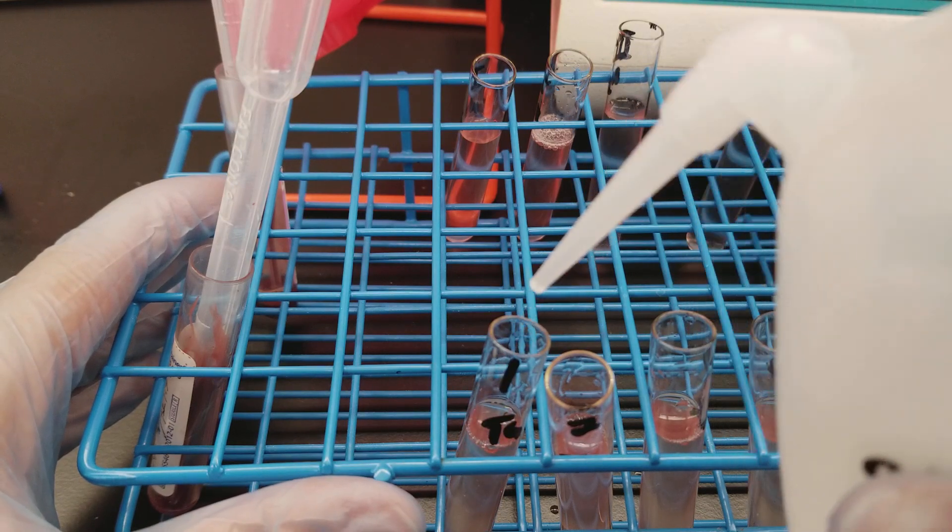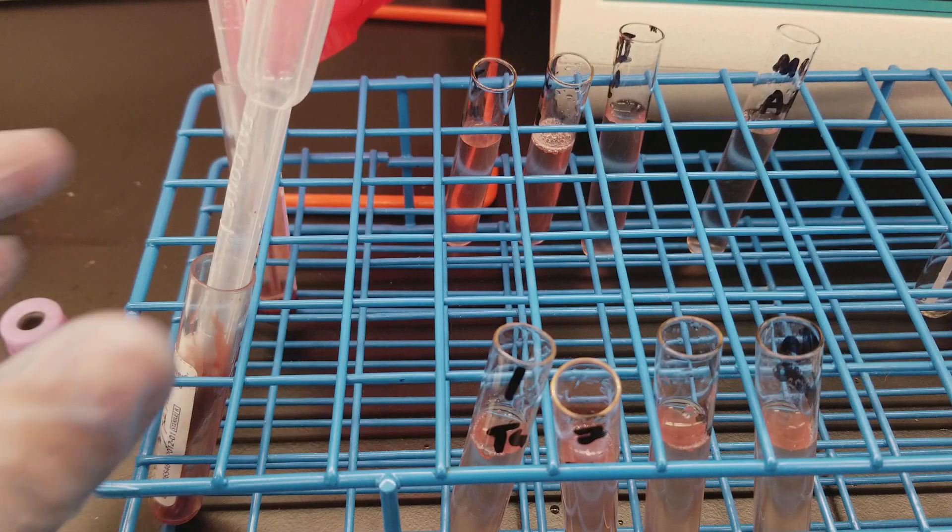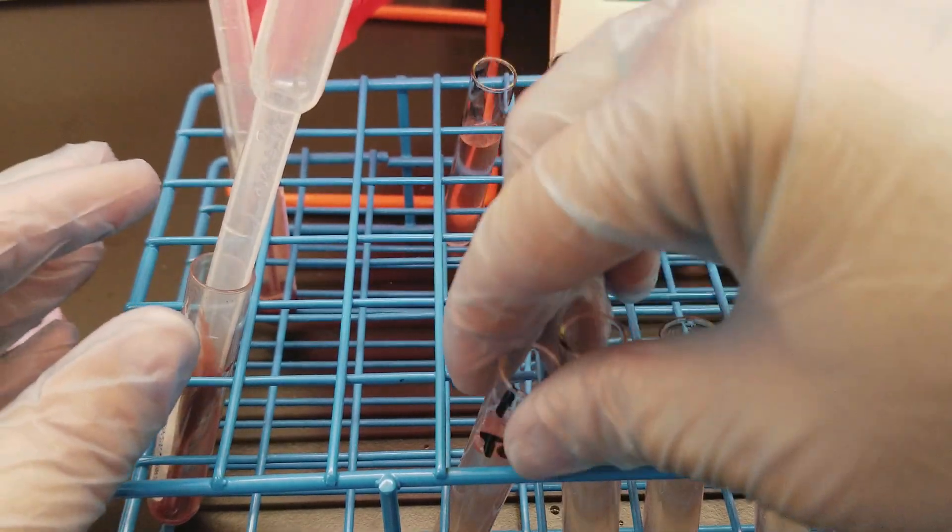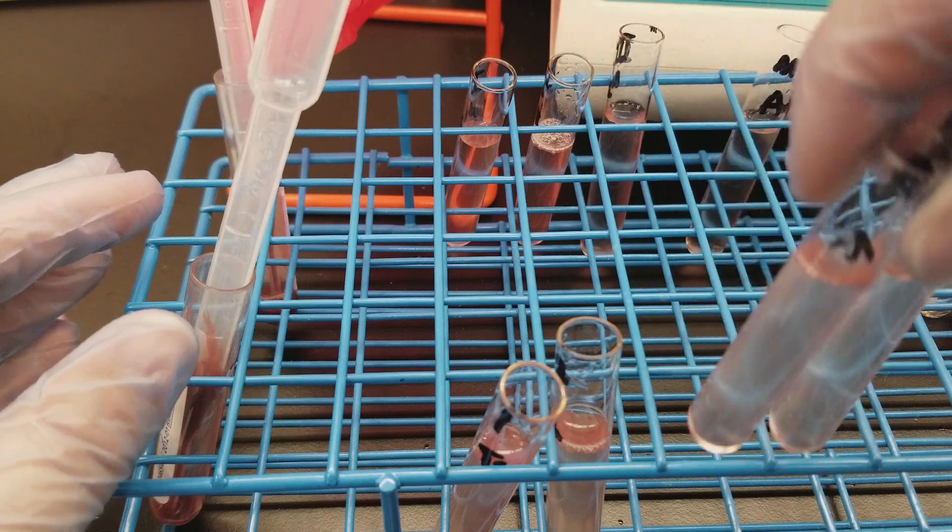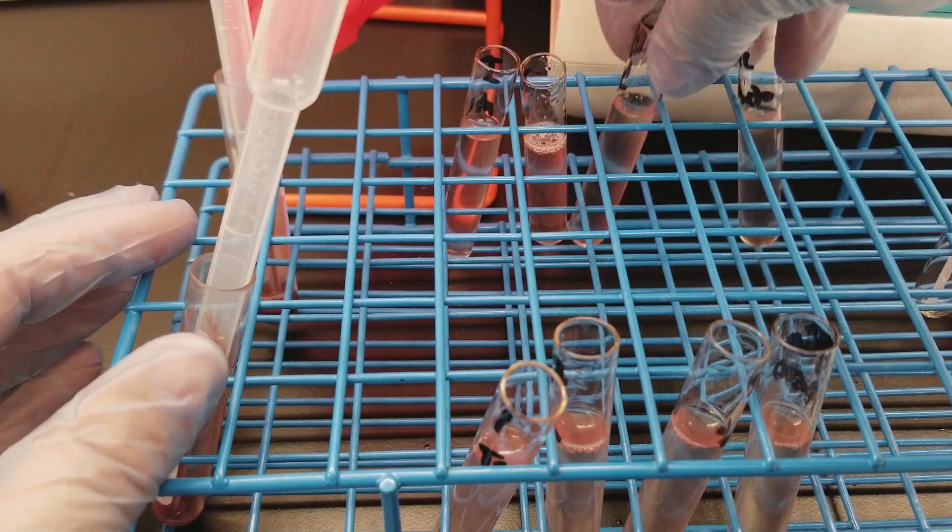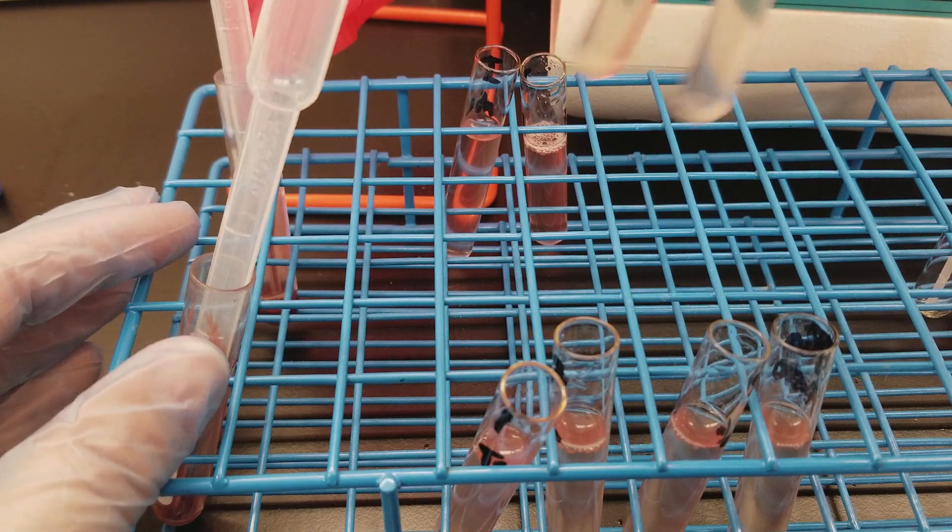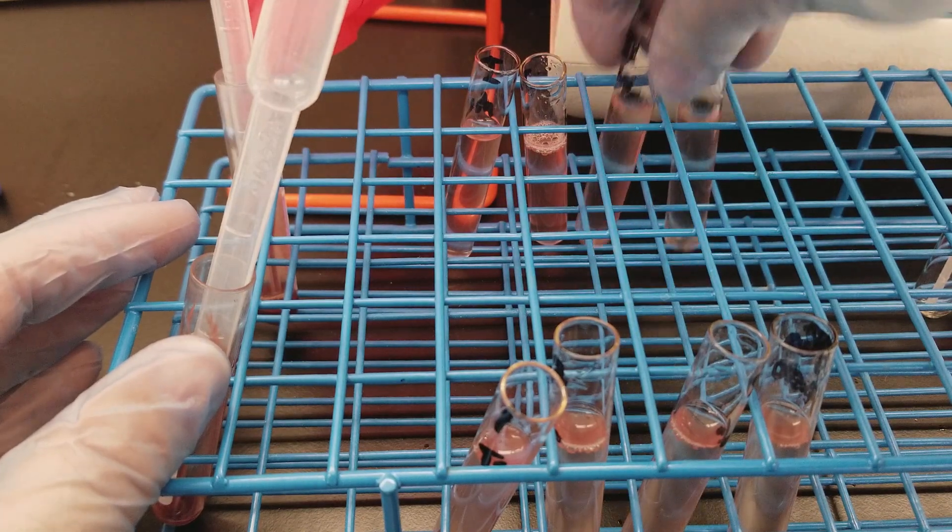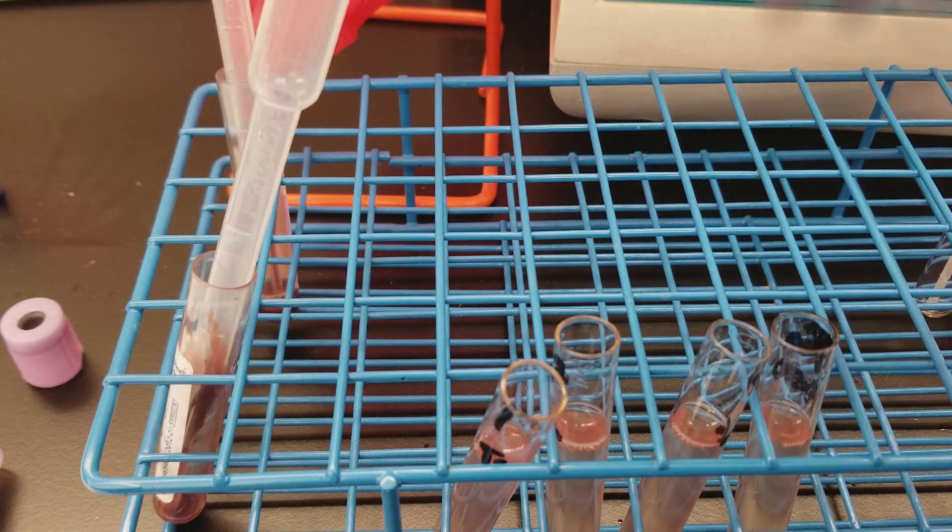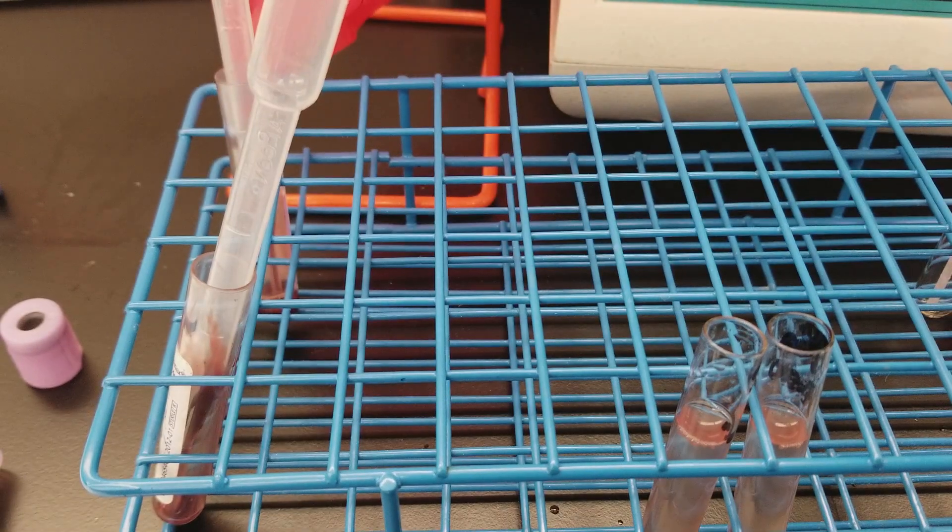We gently re-suspend them and put them into the centrifuge. Then we bring them out, dump the saline off the top, keeping the button at the bottom. And then we do the process over again. So we're going to do that three to four times.